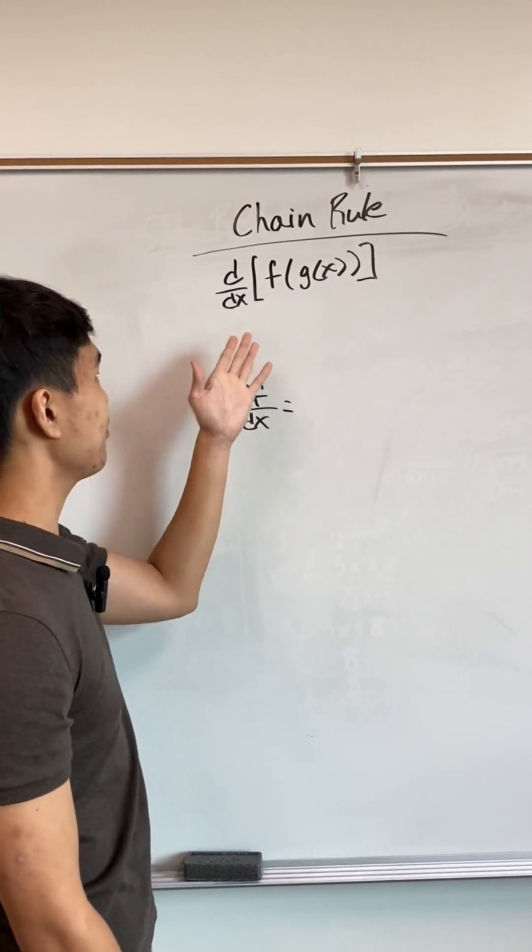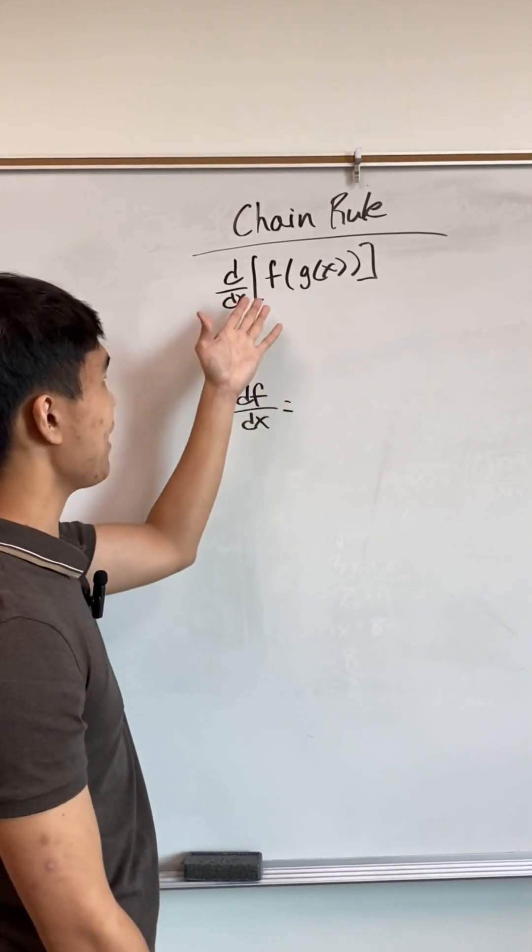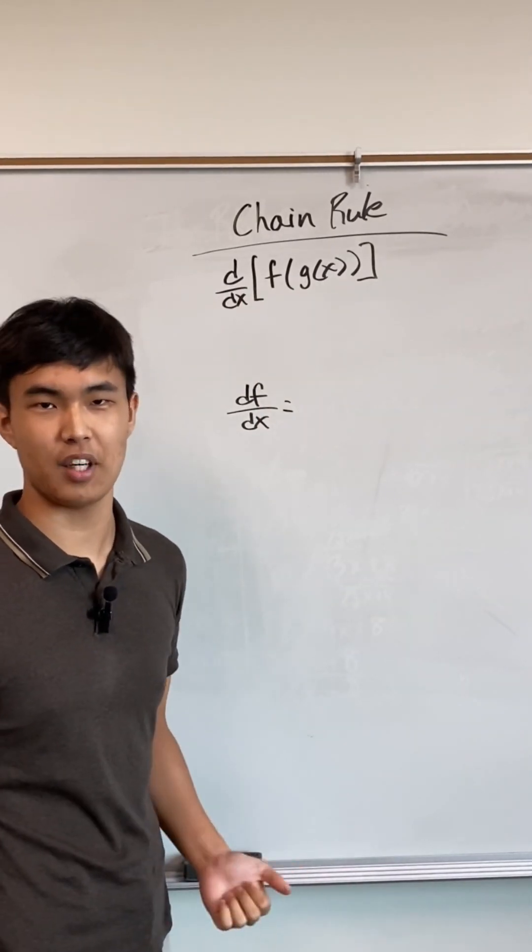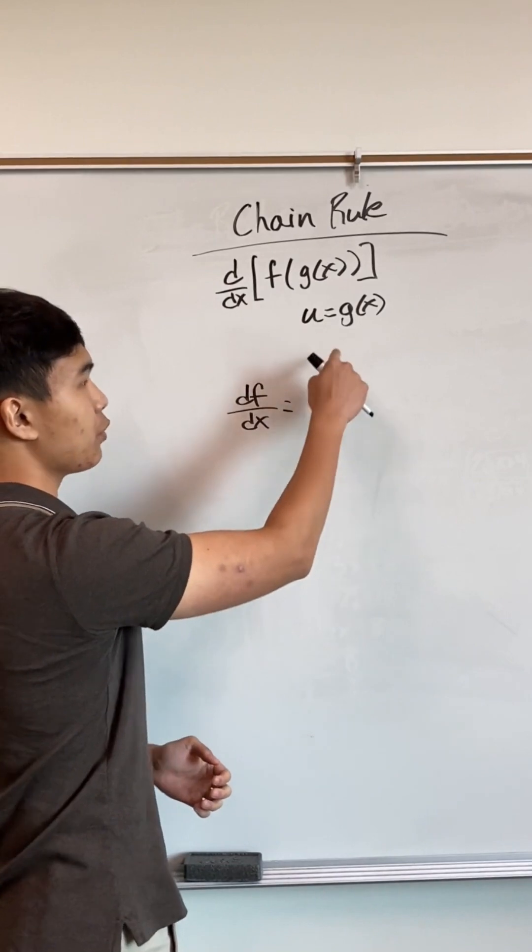Here, if we're trying to find the derivative of f with respect to x, that's impossible because it's f of a function, not f of x. To get around this, we're going to do what all mathematicians do when they get stuck. We're going to make stuff up. I'm going to make up an entity u and say that u equals g of x.